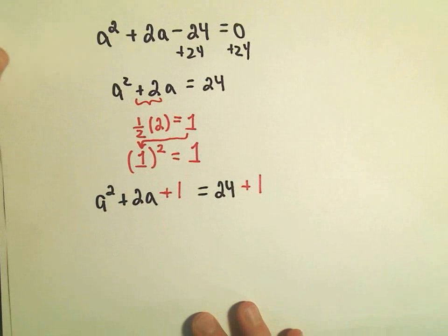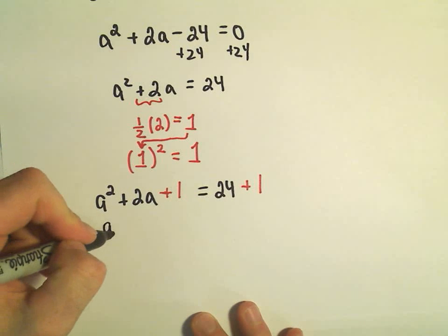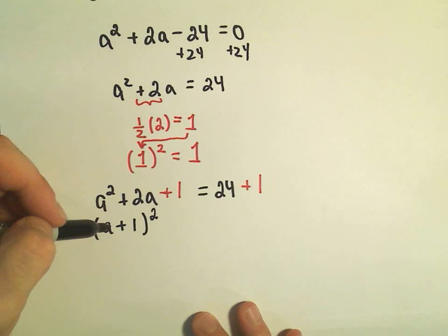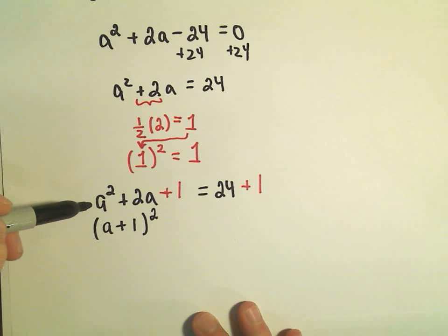And again, this now factors. This is going to be a perfect square. We'll get a plus 1 quantity squared. And you can distribute this out, a plus 1 times a plus 1, and convince yourself you do get a squared plus 2a plus 1.